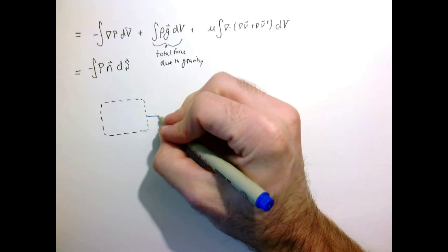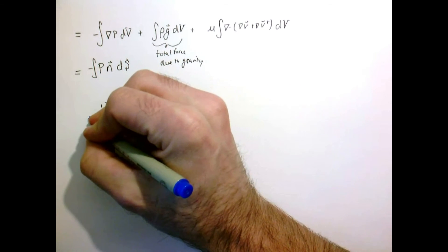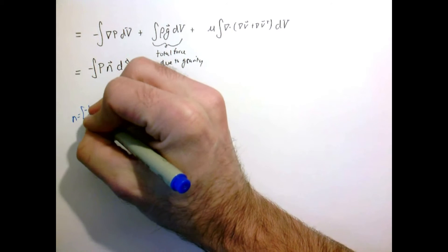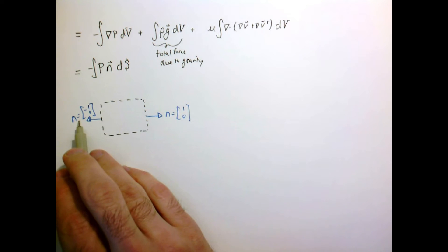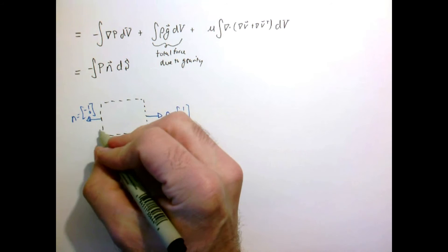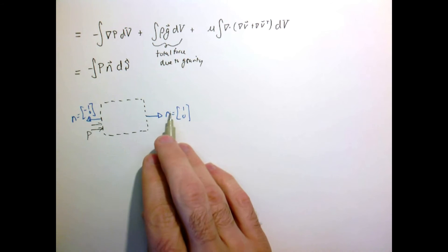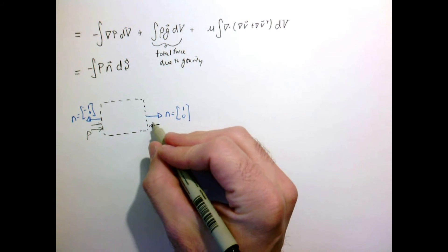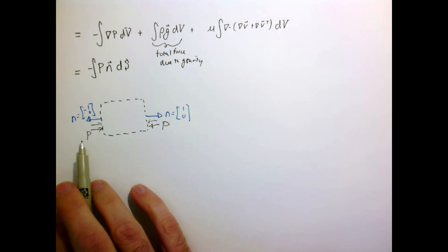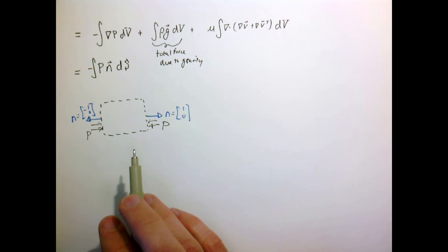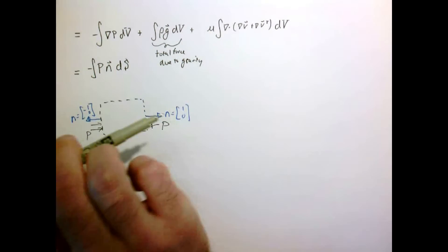Looking at the left and right surfaces: the right surface has normal vector (1, 0) and the left has normal vector (-1, 0). For the pressure term, minus pressure times the normal on the left side means the two negatives cancel, telling us the pressure pushes to the right. On the right side, the negative sign and positive normal mean pressure pushes to the left. If those two pressures are equal they cancel, giving zero net force in x. If the pressures differ, we get a net force due to pressure pushing either way.